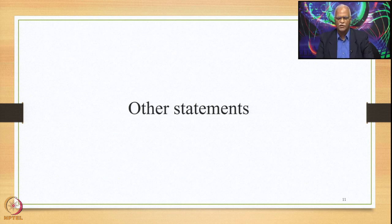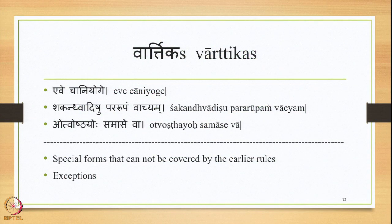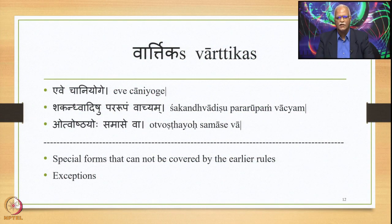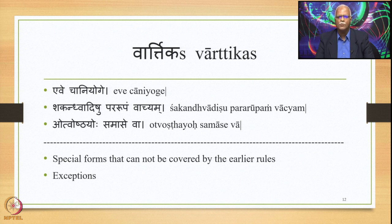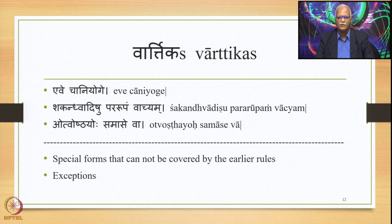After having seen the main Sutra stating the Pararupa Sandhi, let us now examine some other Vartika statements by later Paninian grammarians. These Vartikas state Pararupa Sandhi in further restricted domains. There are three Vartikas: the first is Ewe Chani Yogi; the second is Shakandhvaadishu Pararupam Vachyam; and the third is Otvoshthayoho Samase Va. These Vartikas deal with special forms that cannot be covered by earlier rules and are exceptions to those rules.